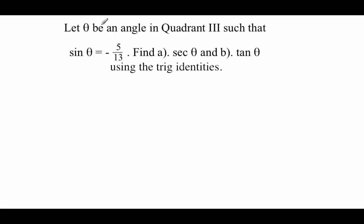Take a look at our next example. We've got theta being an angle in the third quadrant, and we know the sine there is negative 5 over 13. We're going to use our trig identities to find the secant and the tangent. This one is very similar to the last one, but in part A we were trying to find a cosine. This time we're trying to find the secant. Remember, cosine and secant are just reciprocals of each other, so finding the cosine for part A is going to be really helpful.